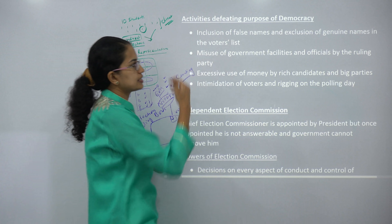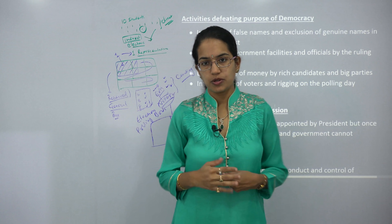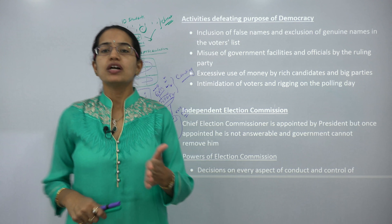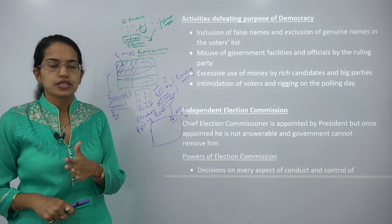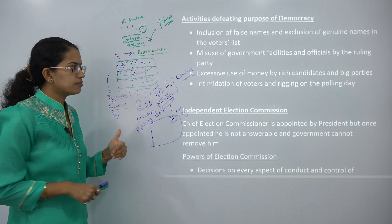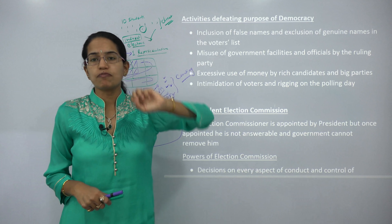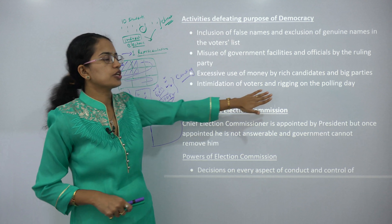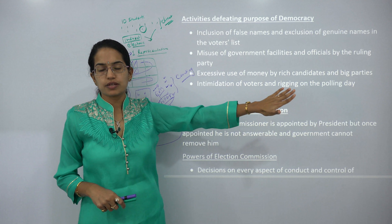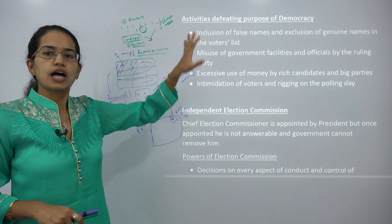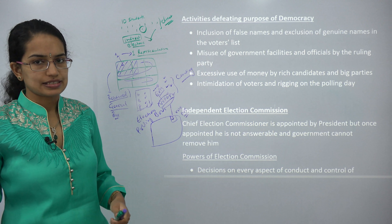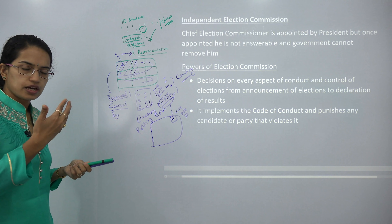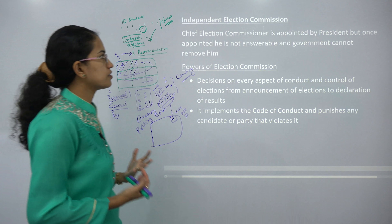Activities that defeat the purpose of democracy include false names in the electoral list, misuse of genuine candidates' names, misuse of government facilities, excessive use of money by rich candidates, intimidation of voters, and rigging at polling booths. All of these are malpractices that present a big challenge to the democratic process.